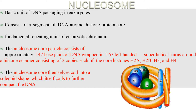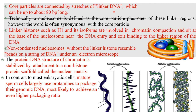The core particles are connected by a stretch of linker DNA which can be up to 80 base pairs long. Linker histones such as H1 and its synonym H5 are involved in chromatin compaction and sit at the base of the nucleosome near the DNA entry and exit, binding to the linker region of the DNA. Non-condensed nucleosomes without linker histones resemble beads on a string of DNA under the electron microscope. The protein-DNA structure of chromatin is stabilized by the attachment of a non-histone protein called scaffold protein, also called the nuclear matrix. In contrast to most eukaryotic cells, mature sperm cells largely use protamine to package their genomic DNA, most likely to achieve an even higher packaging ratio.